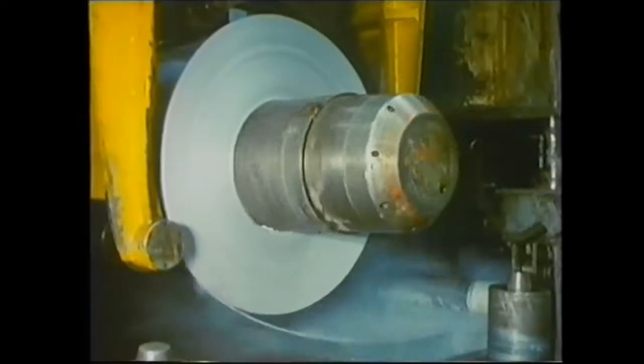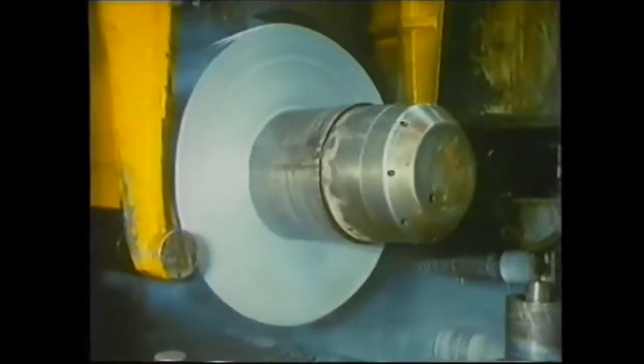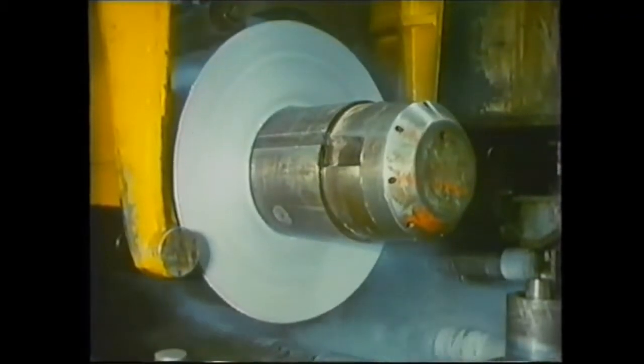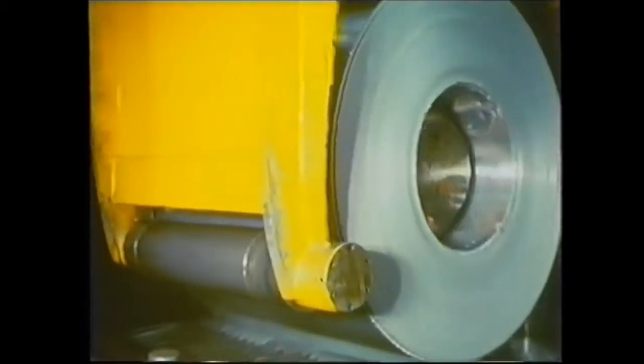The change in grain structure that results from cold-working is accompanied by a change in the mechanical properties of the metal. Its hardness and tensile strength increases while the ductility decreases.